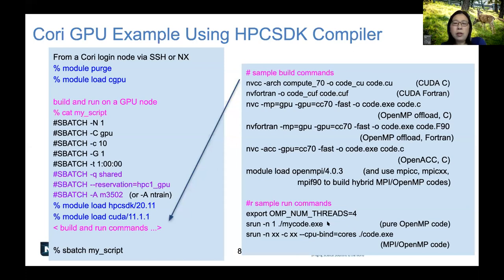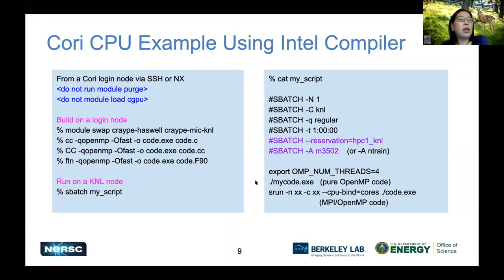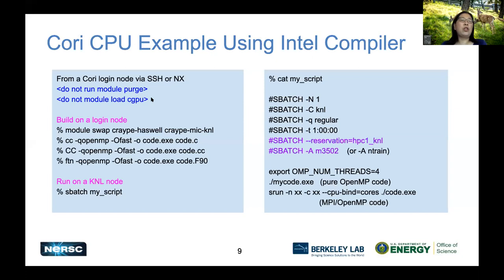To run on GPU, always use srun, even if it's just a non-MPI code. On the CPU side, this is an example using the Intel compiler. Don't do module purge and don't load CGPU. If you are doing exercises on both GPU and CPU sides, we recommend using two separate terminals to avoid confusion with module environment settings. Open a new terminal for CPU work. To optimize for KNL, do module swap QAPE Haswell to QAPE Mike KNL, and use compiler wrappers to build your application. There's also a batch script to add the reservation and account name.